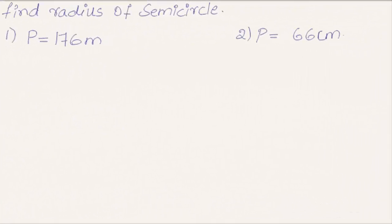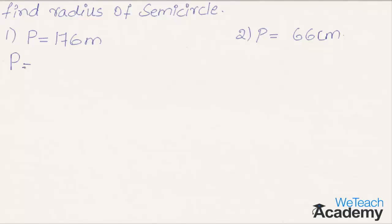Now let us proceed and try to solve one more example using the same formula. Here we have to find the radius of a semicircle when the perimeter is equal to 176 meters. We already know that the perimeter of a semicircle is given by r into (2 plus pi), which is equal to 36/7 into r.